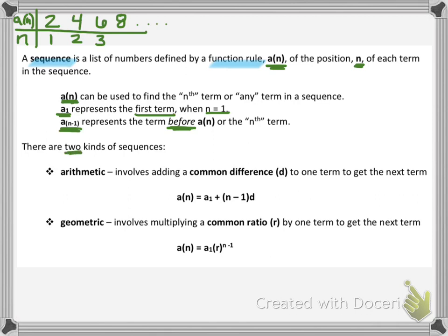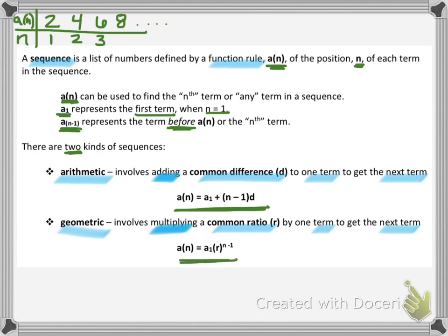There are two kinds of sequences: arithmetic and geometric. Arithmetic involves adding — it's the number you're adding to one term to get the next term. In the 2, 4, 6, 8 example, you would be adding 2 to the previous number to get the next number. That 2 is called the common difference, or D. Geometric sequences involve multiplying by a number to get from one term to the next.